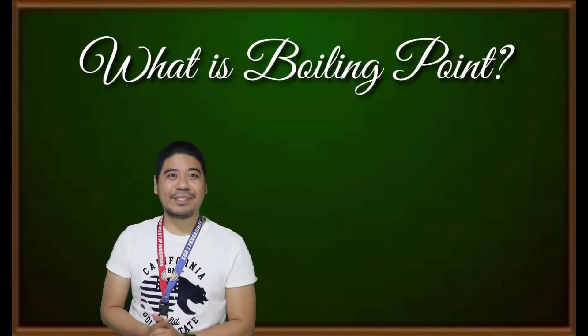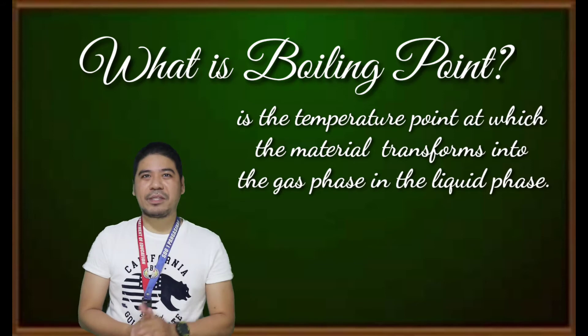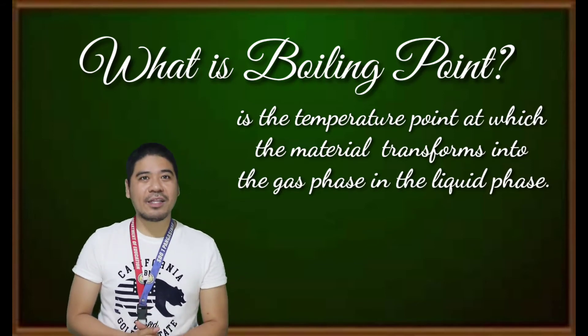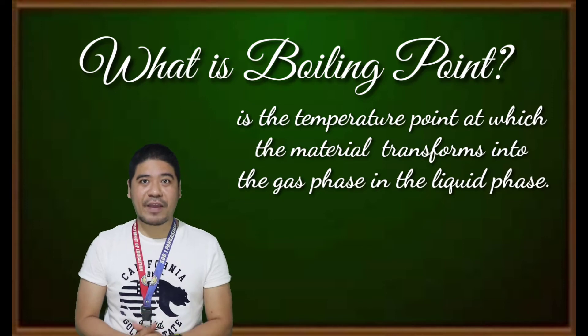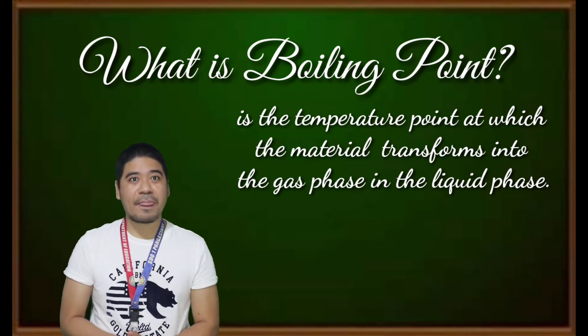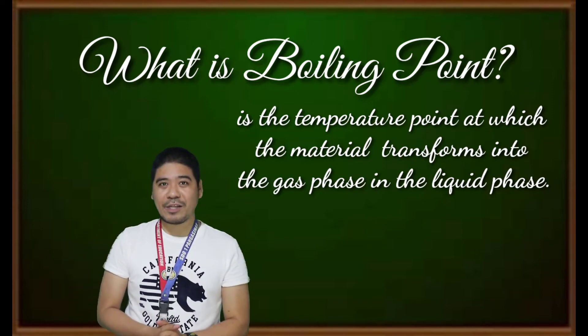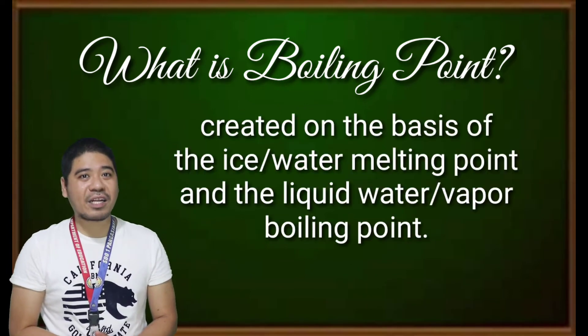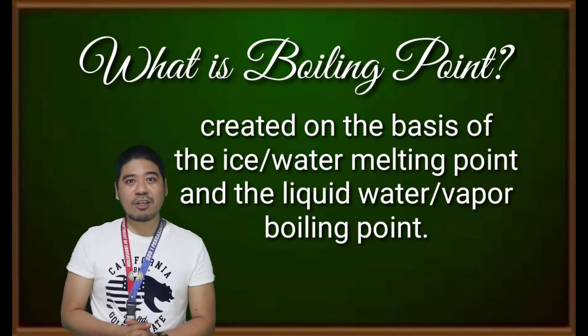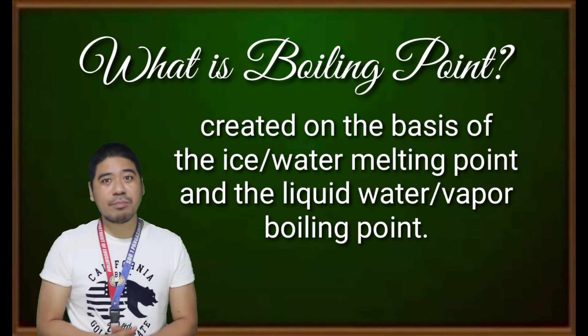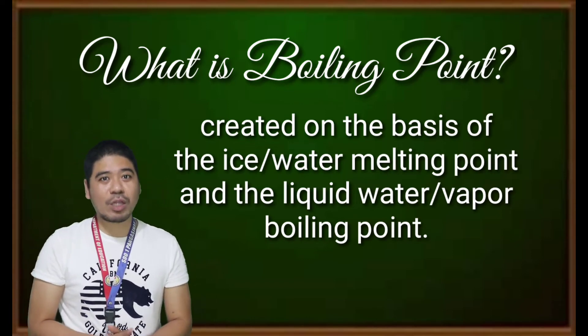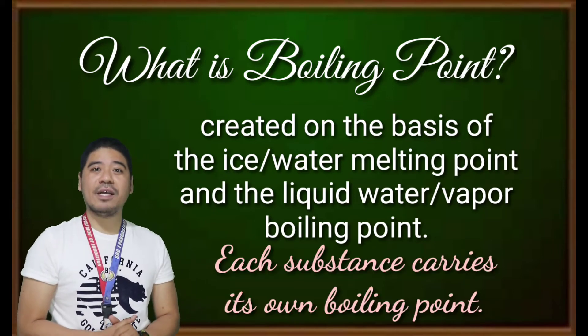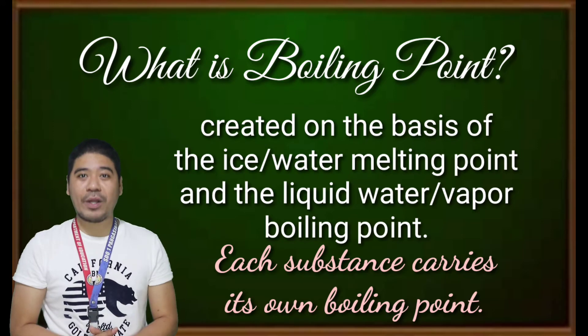What is boiling point? The boiling point for any material is the temperature point at which the material transforms into the gas phase from the liquid phase. This happens at 100 degrees centigrade for water. The Celsius scale was in fact created on the basis of the water or ice melting point and the liquid water or vapor boiling point. Each substance carries its own boiling point.